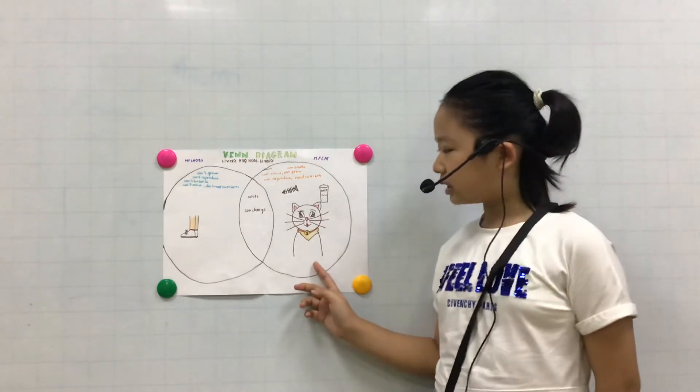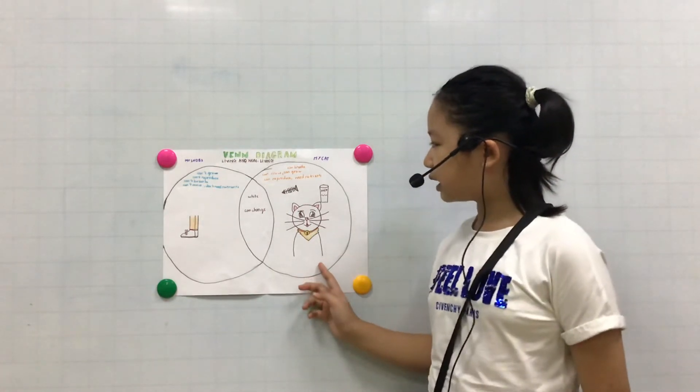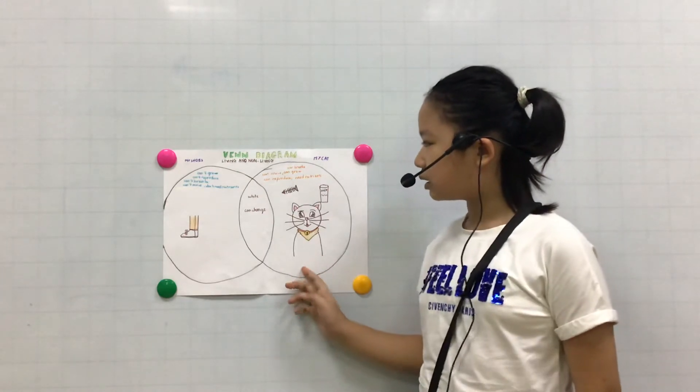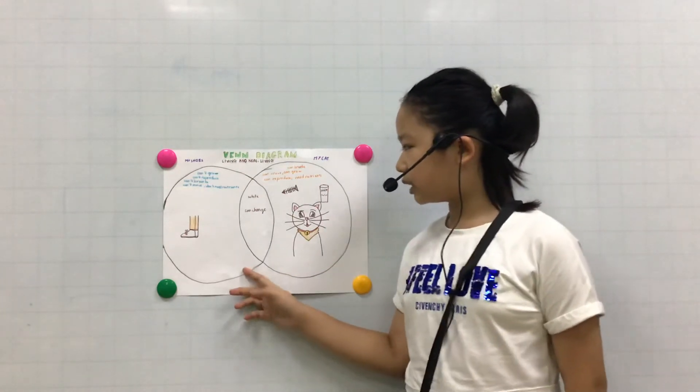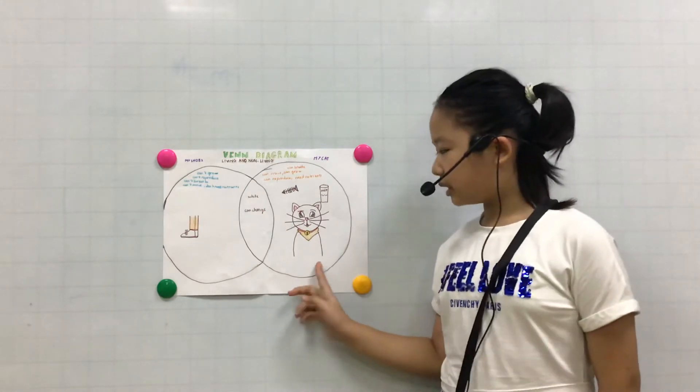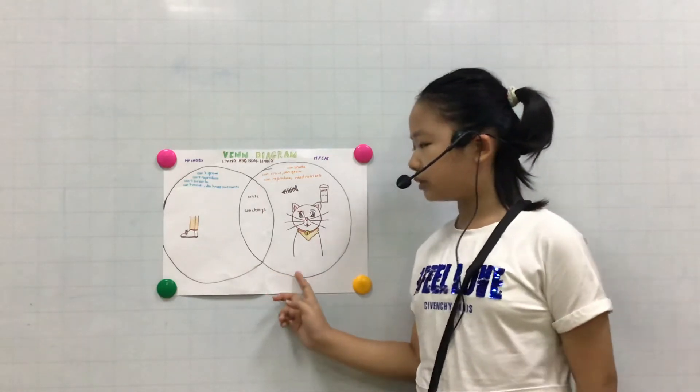The next difference is my cat needs nutrients but my shoes don't need nutrients. My cat eats and drinks to get nutrients.